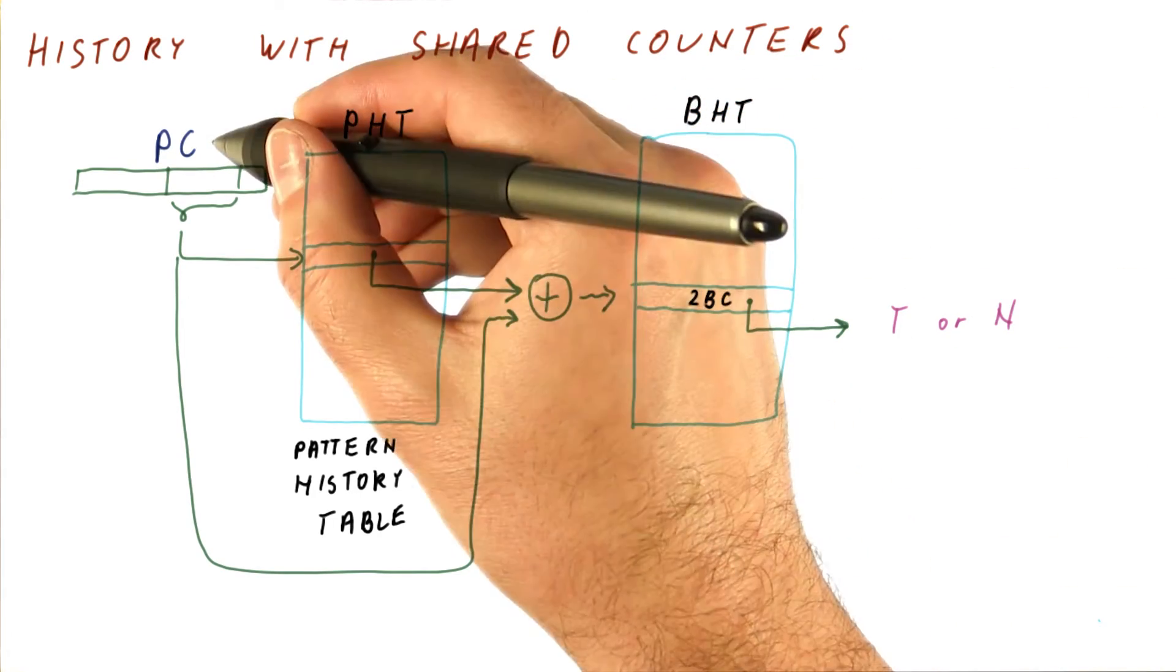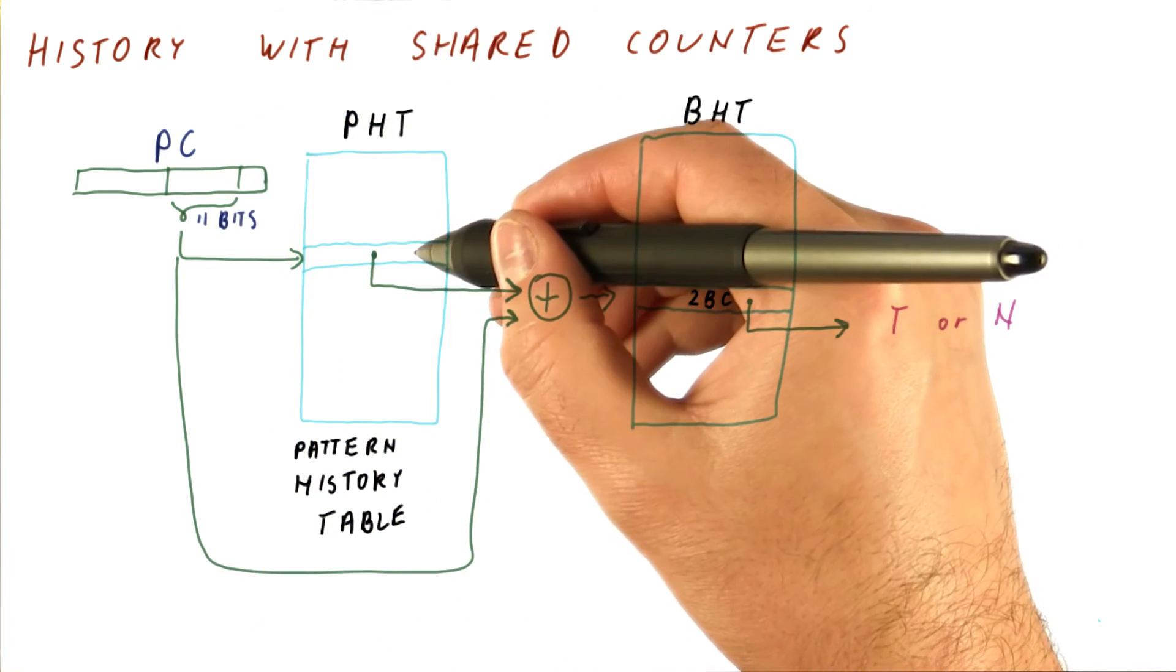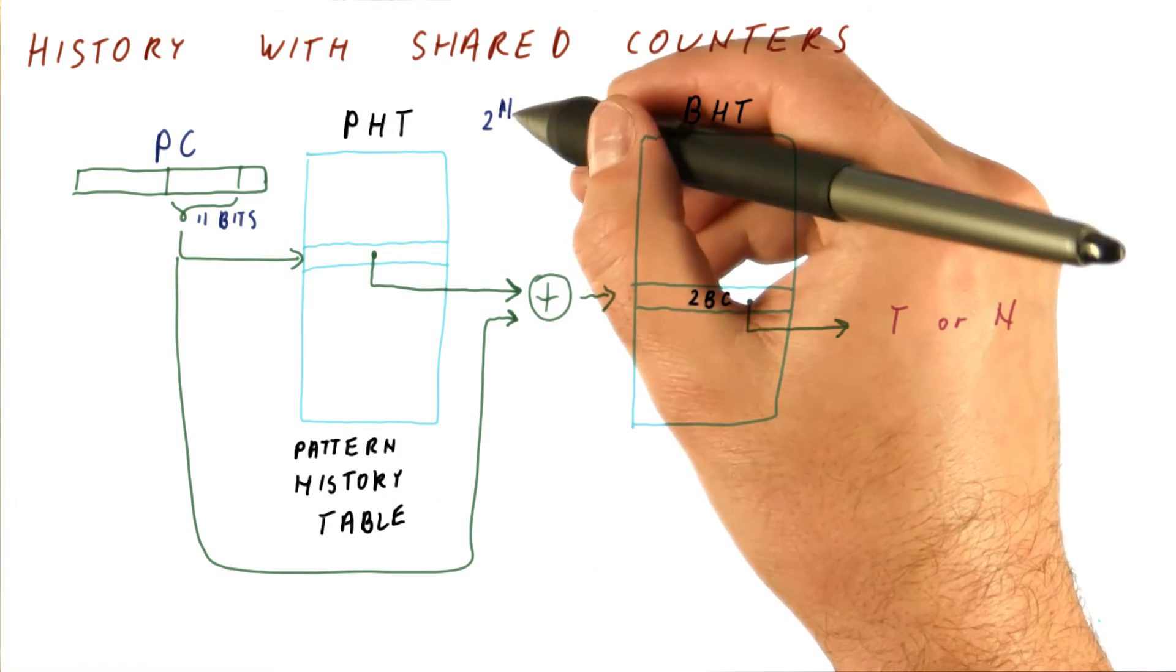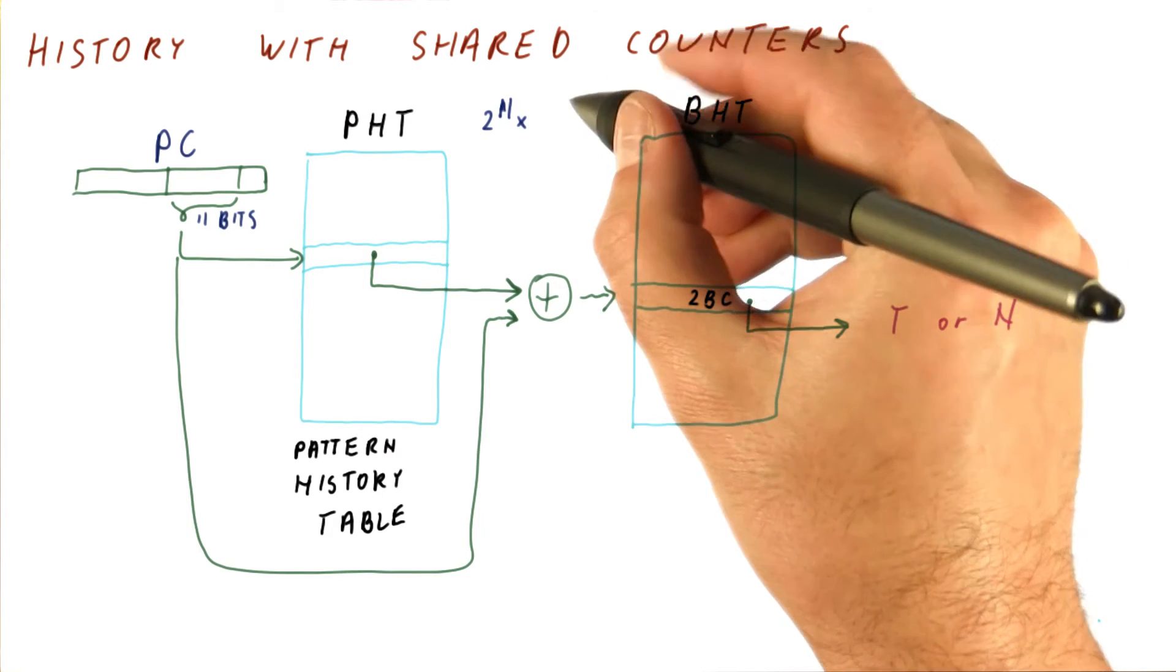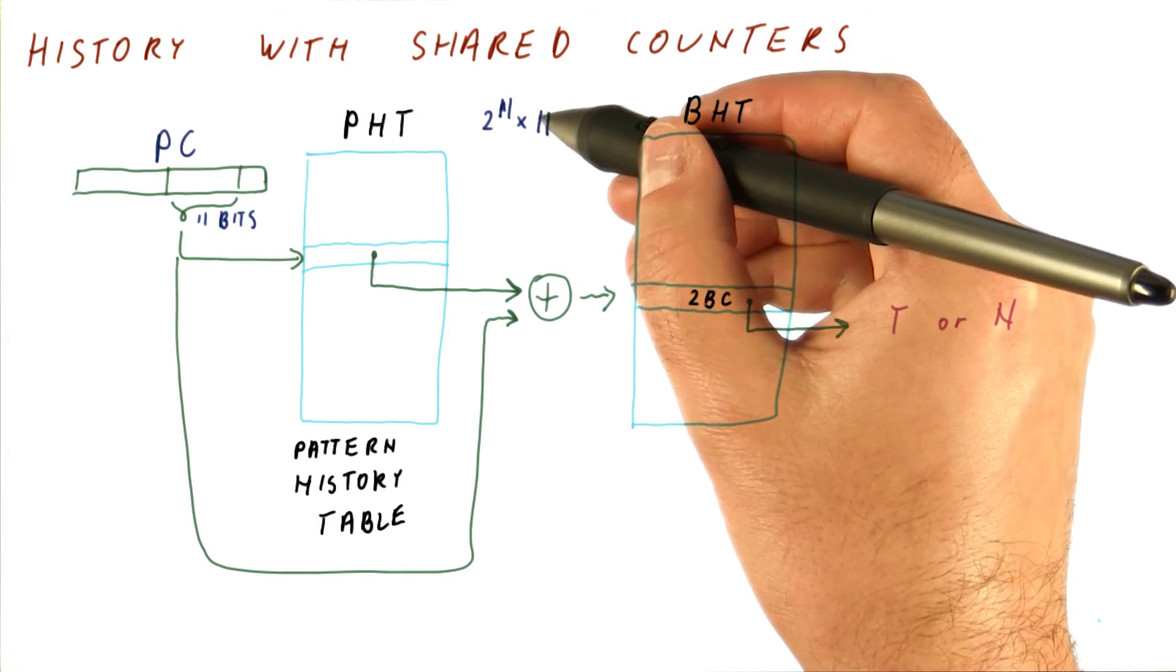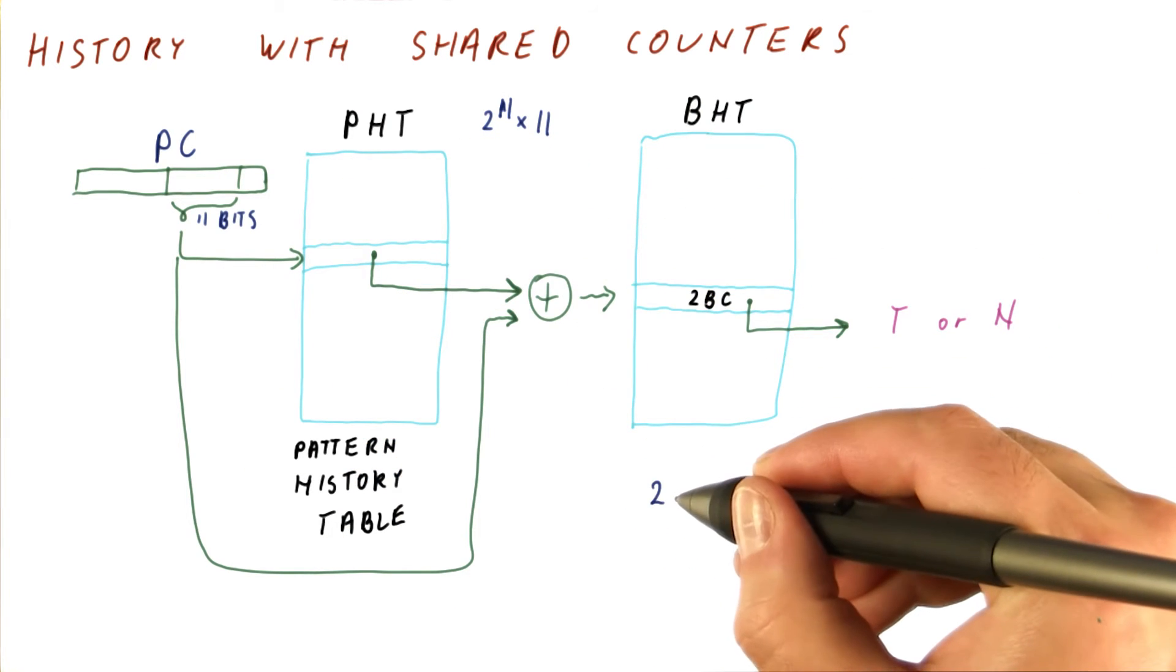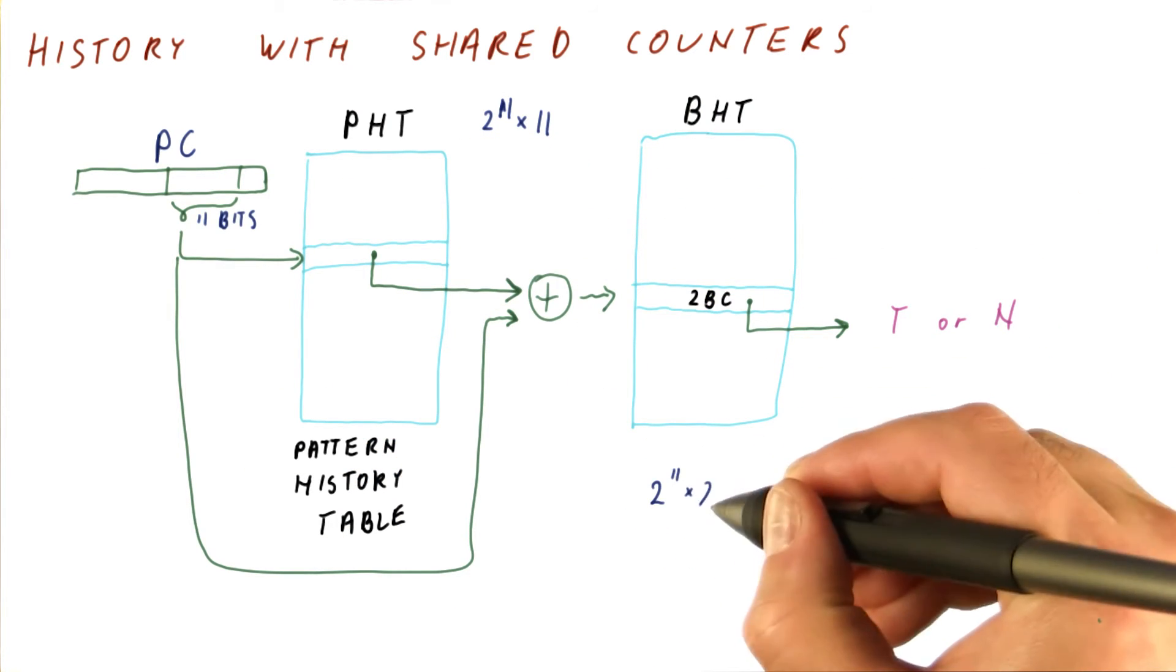For example, if we take 11 bits of PC, and we index into the PHT with them, we will need two to the 11th histories times, let's say, 11 bits of history. We XORed those 11 bits with these 11 bits. So we will have two to the 11th two-bit counters.